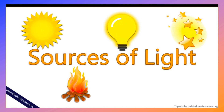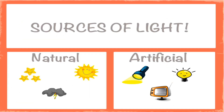These are sources of light energy: the sun, fire, and electricity. Sources of light have two categories, which are natural and artificial. Natural sources include the sun, lightning, and stars — these are God-made. Artificial means people-made, so these include flashlights, light bulbs, street lights, and other lights like Christmas lights and the lights we have at home.